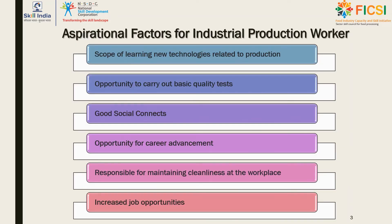After completing the training of industrial production worker, a person can learn different operations in various segments of food processing. He or she can get the opportunity to perform minor quality tests, which will increase their horizon in this domain. The need for industrial production workers is growing at a tremendous rate as more and more food processing facilities are getting established, thereby creating job opportunities for many.